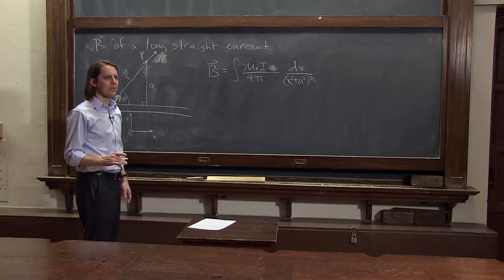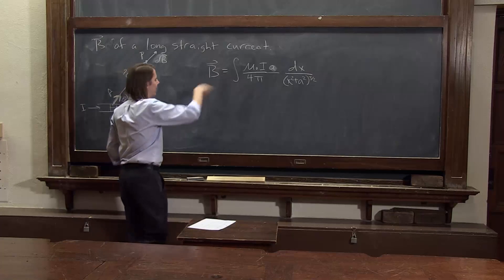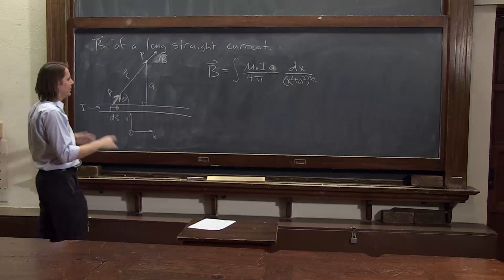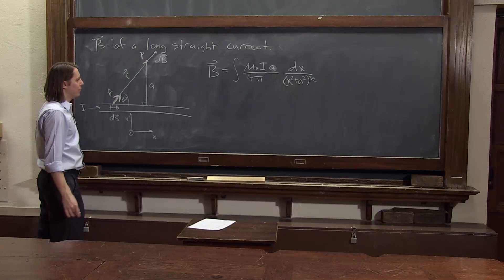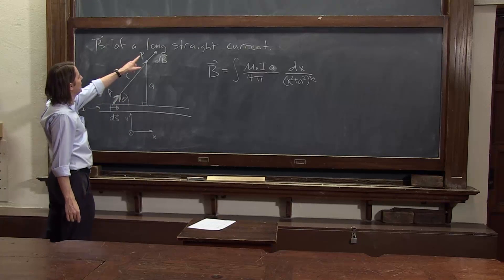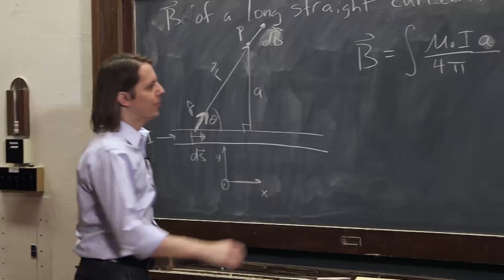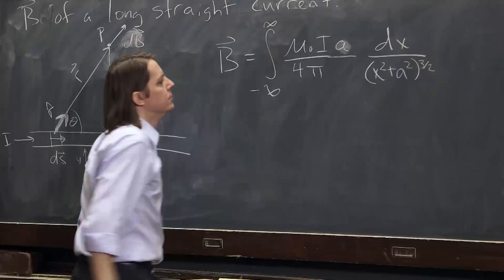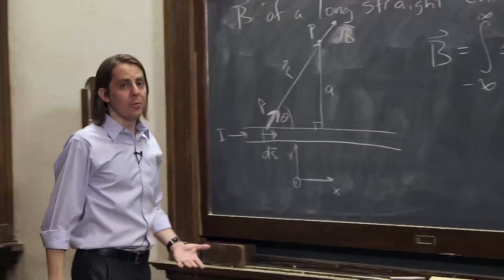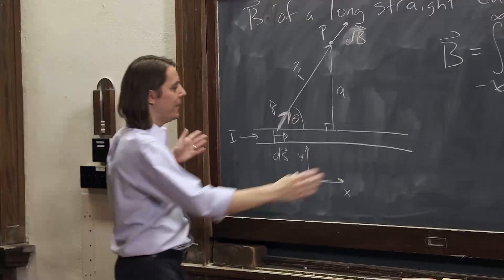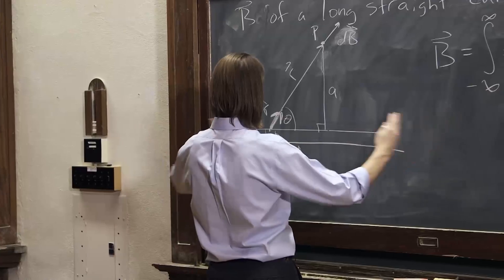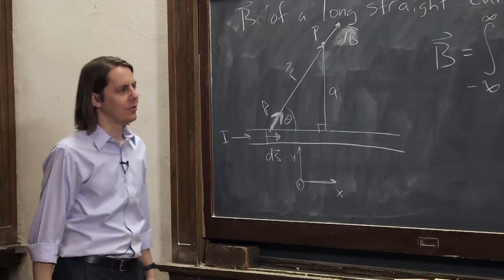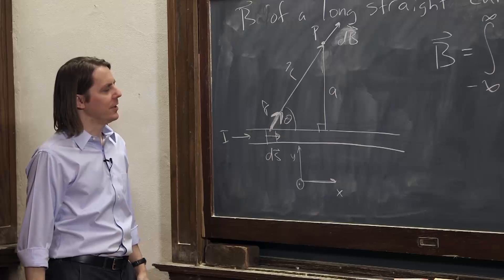The last thing we need are limits on the integral. We're describing a physical system — this isn't calculus where the limits are meaningless. This is a real system, so we have to have real limits. In this case, we're doing a really long wire, so we're going to integrate from minus infinity to infinity. The same integral could be used to find a finite wire — if you placed it at the origin from minus L over 2 to L over 2, you could plug those in and get the answer. But let's do the infinite case.